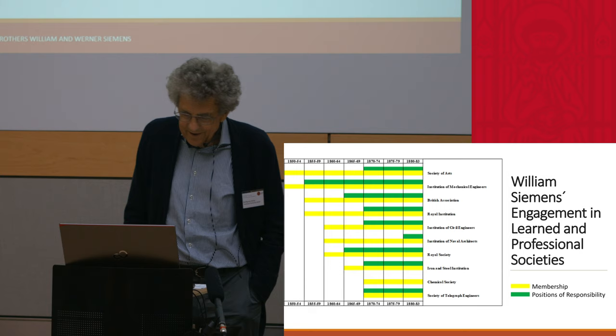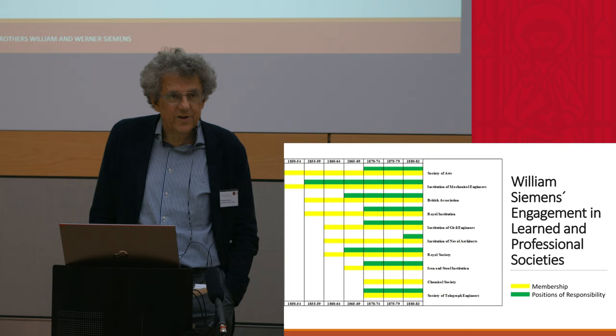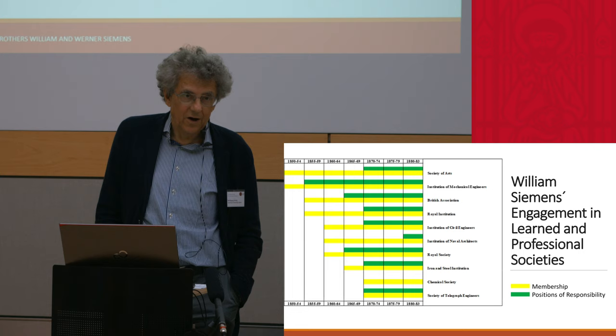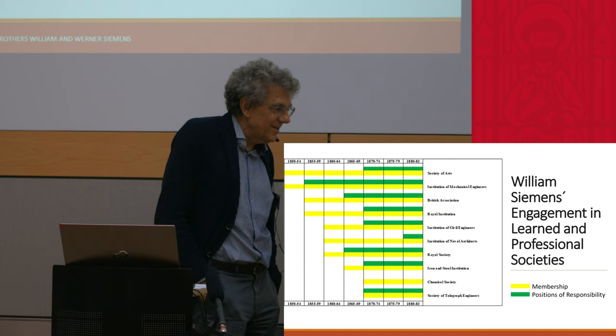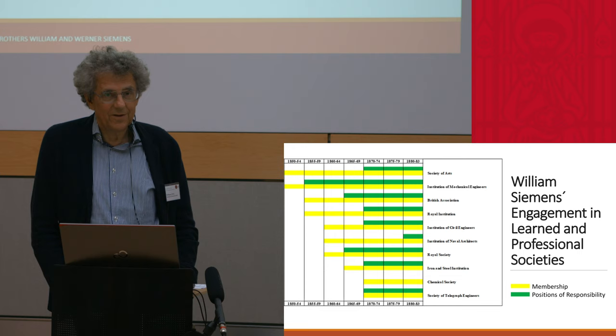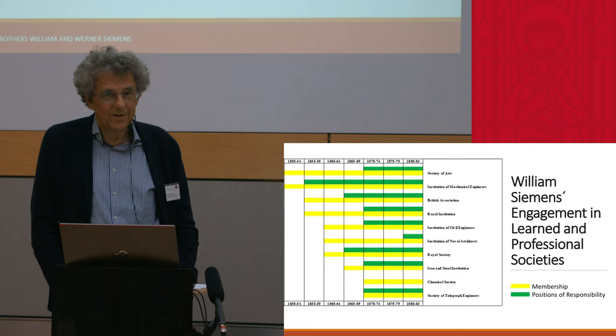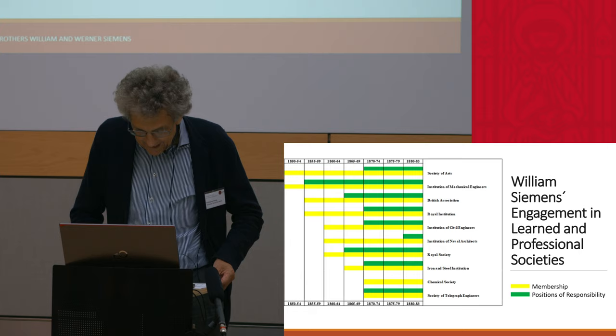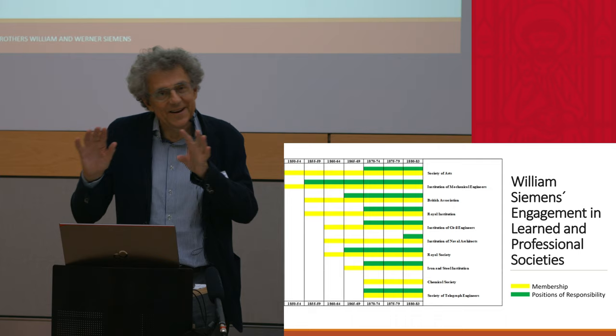In the 1860s and 70s, he held responsible positions in these societies as president, member of the board, chairman of sections, and so on. That he was an engineer of high esteem is shown by the fact that after his death he received a window in Westminster Abbey — which, I think in the British tradition, is extremely significant. The window was later removed, but that is another story.